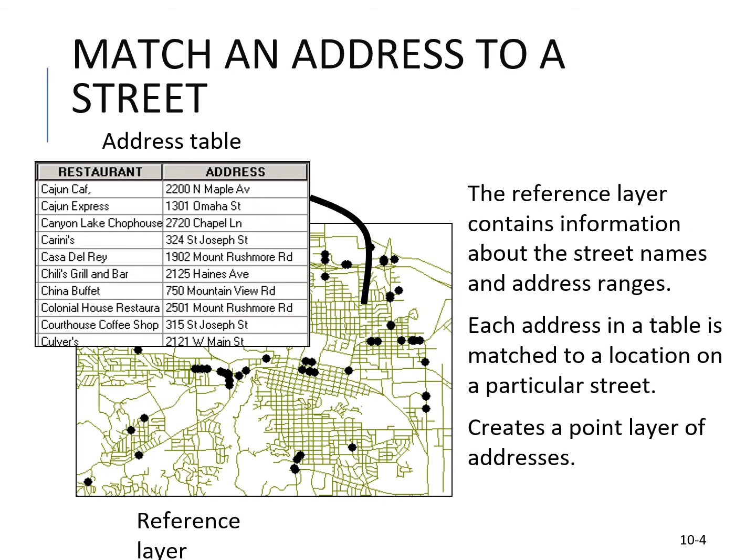To match an address to a street you have to have an address table. Typically you'll bring it in as a CSV or Excel file, and then your reference layer is the spatial element. The reference layer contains information about the streets, names, and address ranges. Each address in a table is matched to a location on a particular street, and it creates a point layer of addresses.